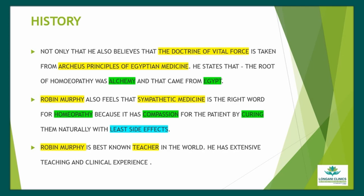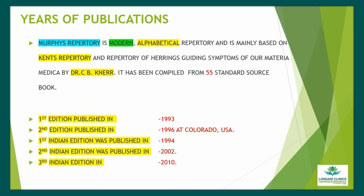Murphy's Repertory is a modern alphabetical repertory mainly based on Kent's Repertory and the Repertory of Hearing Guiding Symptom of our Materia Medica by Dr. C.B. Nehr. It has been compiled from 55 standard source books. The first edition was published in 1993. The second edition was published in 1996 at Colorado, USA. The first Indian edition was published in 1994. The second Indian edition was published in 2002. The third Indian edition was published in 2010.